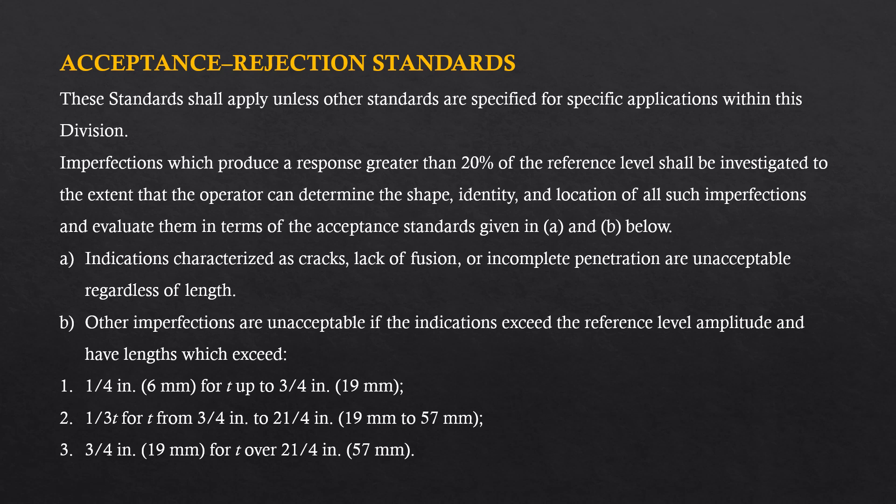Other imperfections are unacceptable if the indications exceed the reference level amplitude and have lengths which exceed the following: if the thickness of the material is up to 19 mm, the length of indication shall not exceed 6 mm; if the thickness is from 19 mm to 57 mm, the length shall not exceed one-third of the thickness; if the thickness is over 57 mm, the length shall not exceed 19 mm.